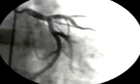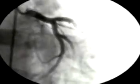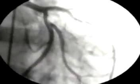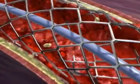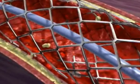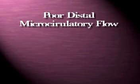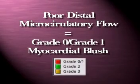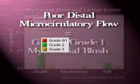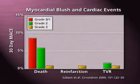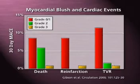Although the angiographic result is quite acceptable, a significant amount of residual thrombus persists, both at the stent edges and adherent to its struts. The poor distal microcirculatory flow, as assessed angiographically by myocardial blush, strongly correlates with the poor clinical outcome.